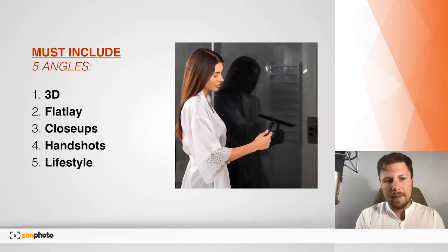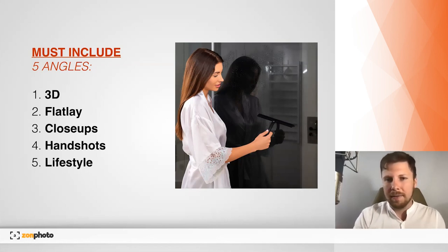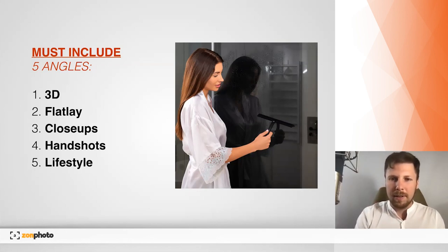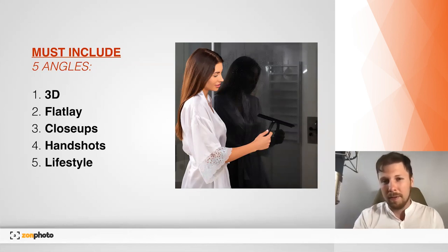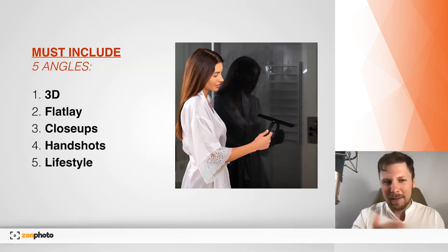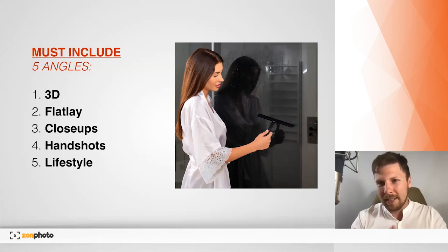The fifth type is lifestyle — the product in use, showing how it works. This stimulates the imagination of how you would use the product. Lifestyle can go even further: you can have lifestyle close-ups, lifestyle flat lays, lifestyle hand shots. Just keep these five angles in mind, and I'll show you some examples of a listing where you can see how they all work together.